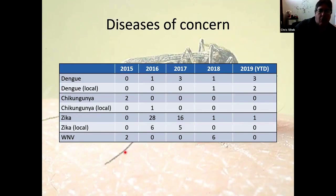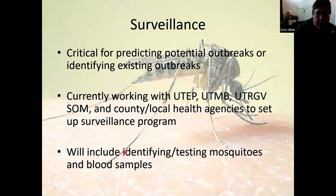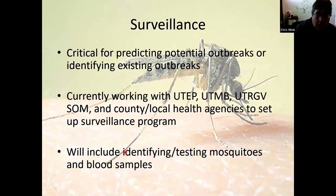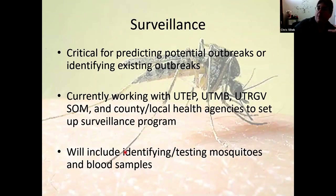One of the tools we have to determine what's going on with these diseases is a process called surveillance. This is what some of our funding is doing. Surveillance is critical for predicting outbreaks, trying to identify if there's a risk of an outbreak, or if there's an ongoing outbreak. We're currently working with many different partners, and a lot of the surveillance is focused on those vectors — collecting them, identifying them, testing them, and so forth.